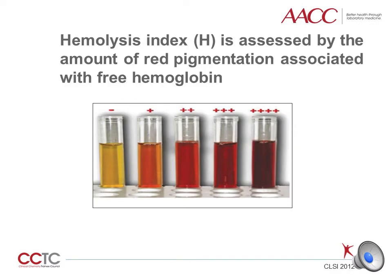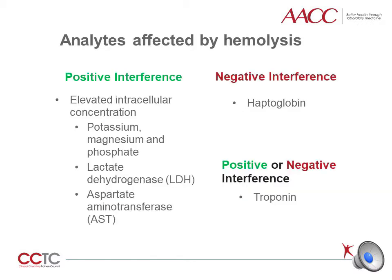Hemolysis index is assessed by the amount of red pigmentation associated with free hemoglobin. Upon damage to the cell membrane, hemoglobin and other intracellular components from erythrocytes are released into the extracellular space of blood. Here is a list of analytes that are commonly affected by hemolysis in the lab. Release of analytes found in high concentration in red blood cells will be falsely elevated. Examples include potassium, magnesium, phosphate, LDH, and AST. Hemoglobin binds to haptoglobin, therefore haptoglobin exhibits a negative interference on the measured haptoglobin concentration.